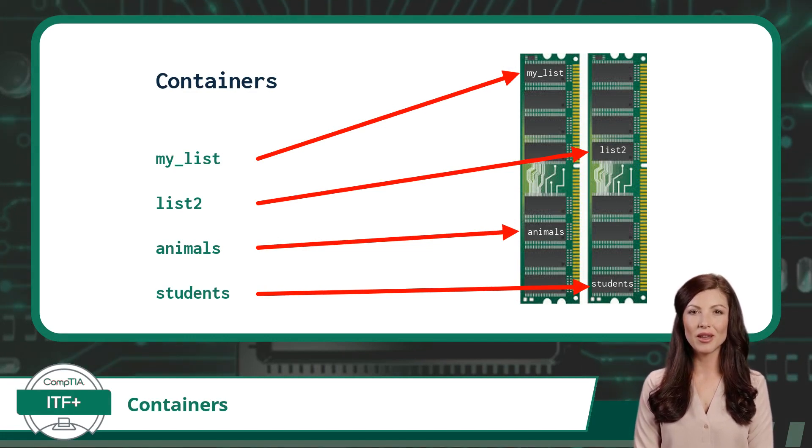Containers are just a special type of identifier and will therefore have many of the same properties as a variable or a constant. Containers will still have a symbolic name that points to a specific location in the computer's memory, and these symbolic names will still help the computer keep track of different pieces of information, referred to as values.